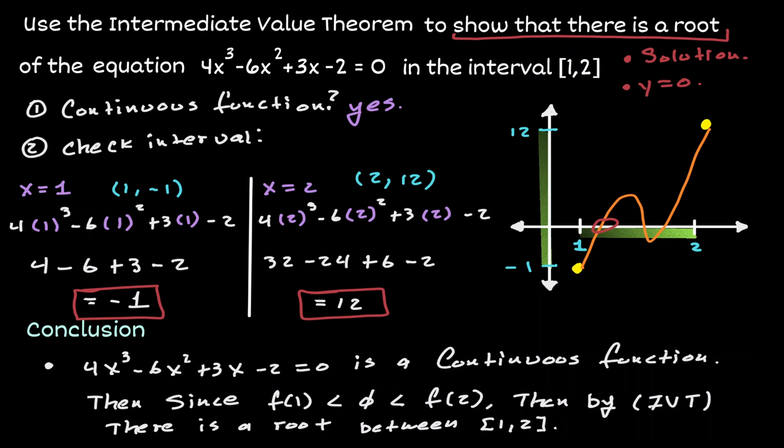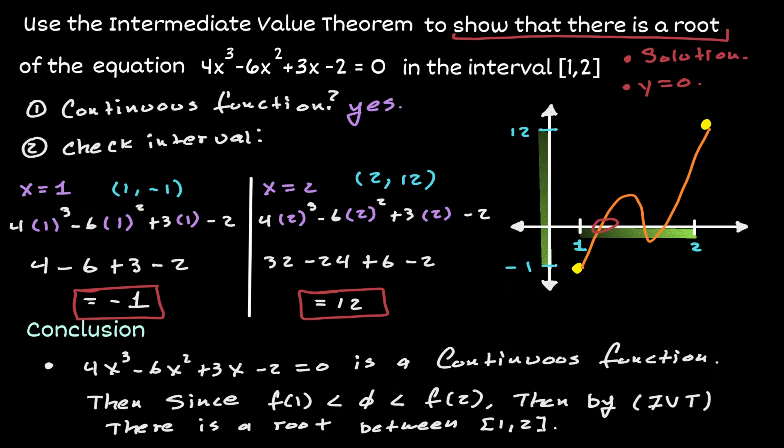In the conclusion I wrote IVT rather than the whole phrase intermediate value theorem — that's a common abbreviation. One thing to notice is that the intermediate value theorem doesn't tell you the value of the solution. It just guarantees that there is a solution within the interval from 1 to 2.